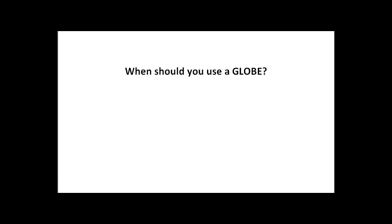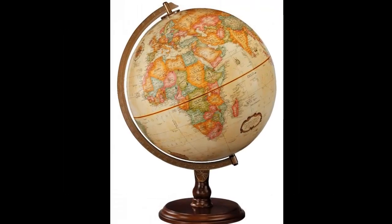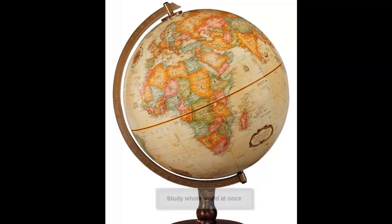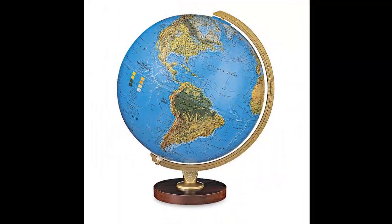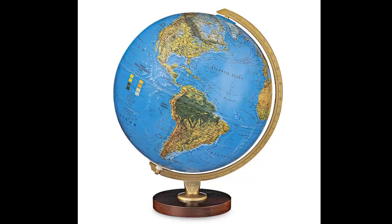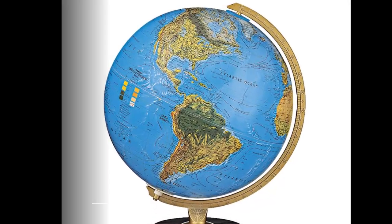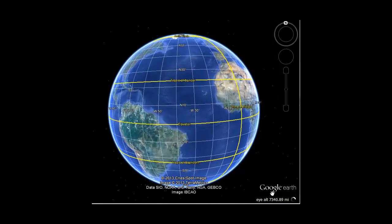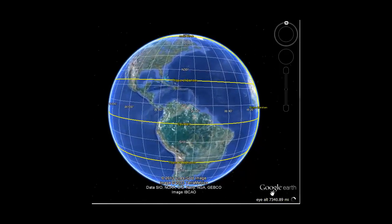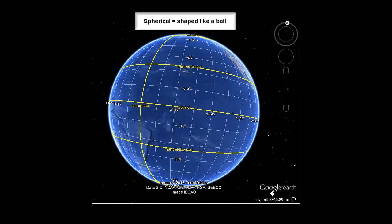When should you use a globe? Globes should be used when you need to study the whole world at once, or sections of the world. Globes, just like maps, can be made in different sizes and colors. But remember, globes like this digital globe shown here on Google Earth are three-dimensional and spherical, meaning they are shaped like a ball.